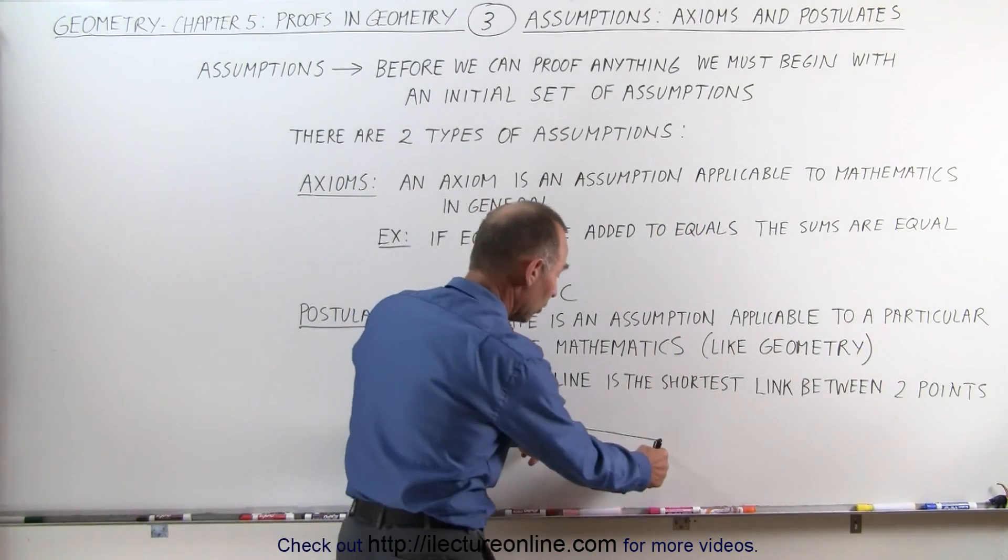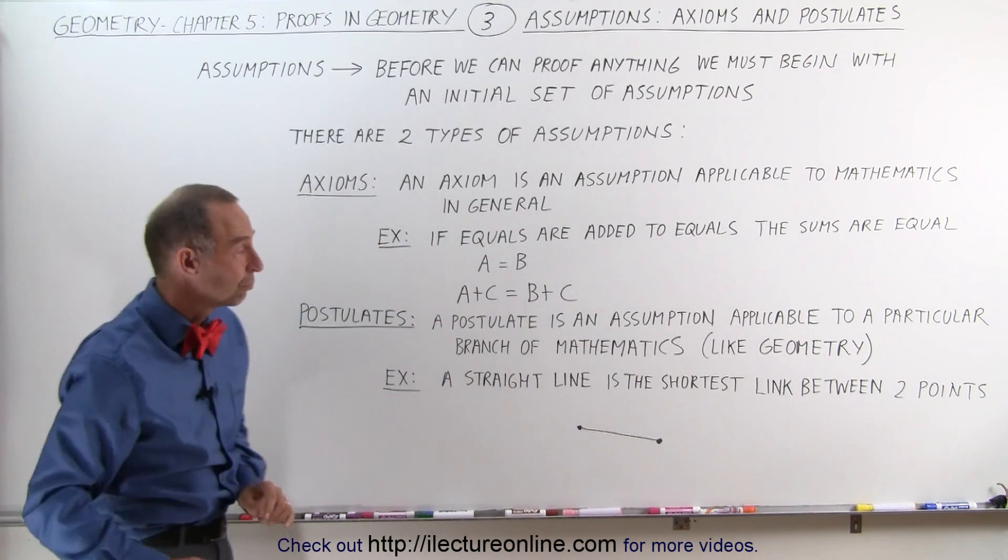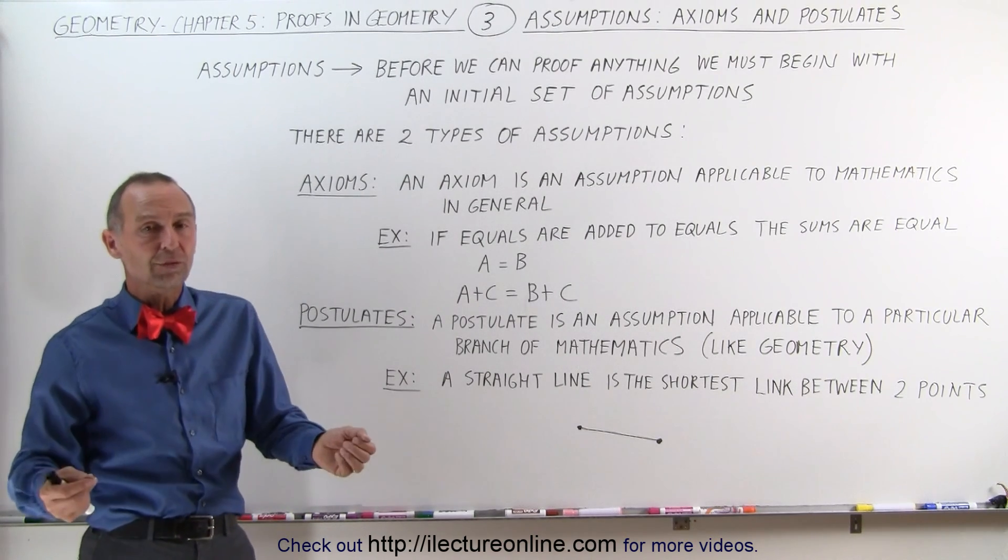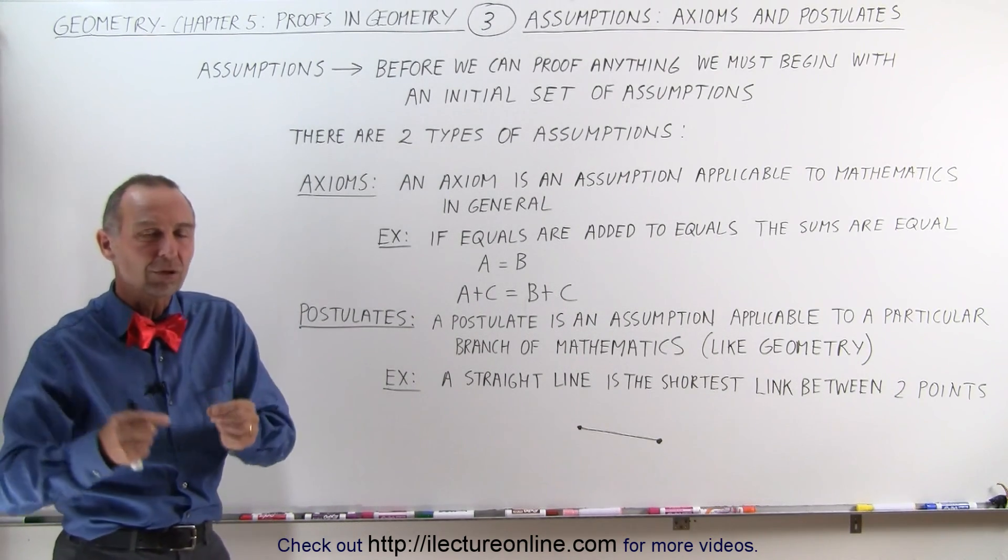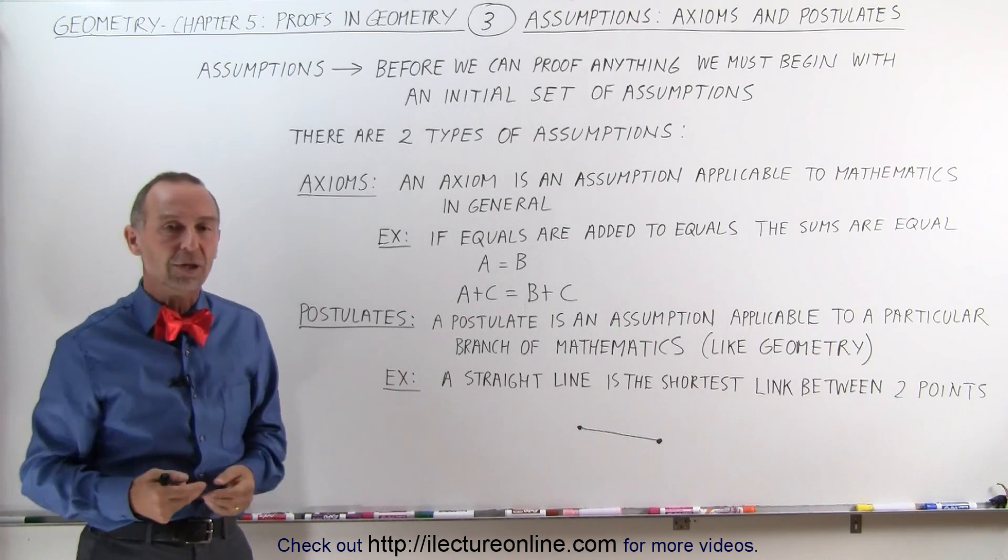We have any two points. The shortest way to get from one point to another is a straight line. That's what we call a postulate. We accept it. We don't need to prove it. We can use that assumption, that postulate, in proofs as we try to prove other theorems.